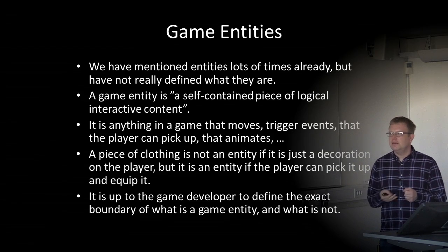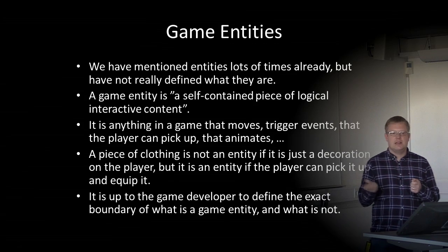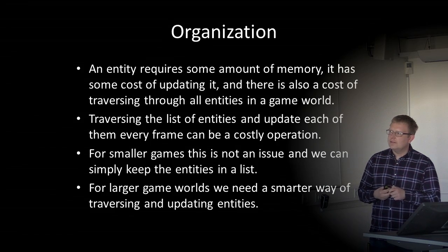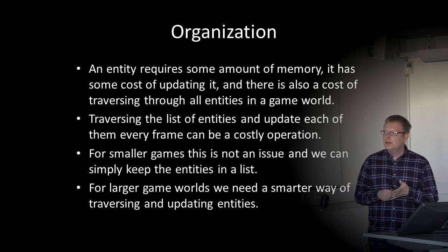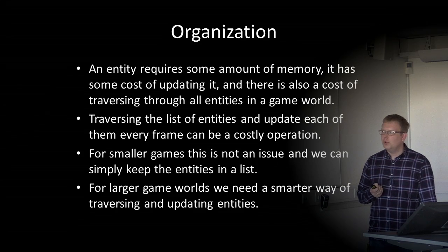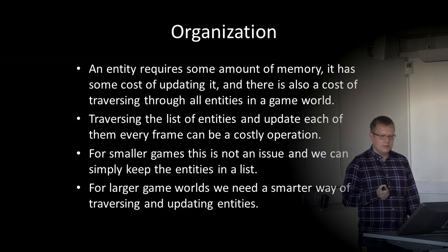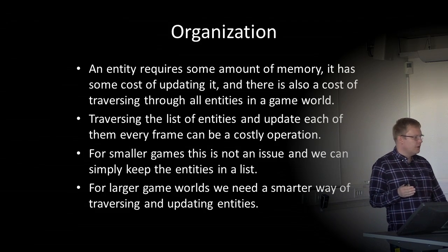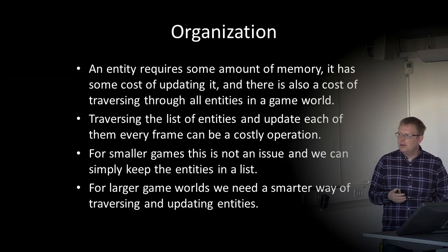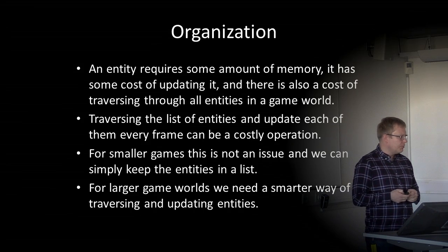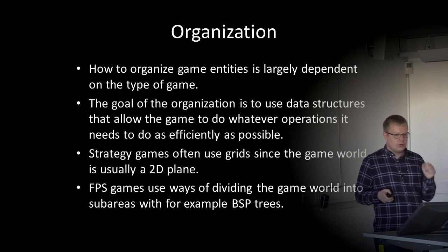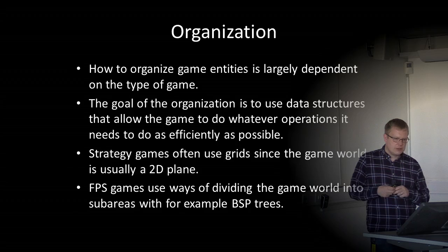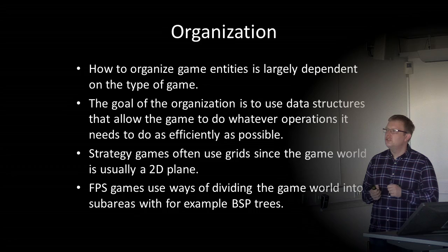A rule of thumb: if it moves, can trigger events, can be interacted with by the player, or can animate — then it is a game entity. An entity requires memory, has a cost for updating it, running animations, and running AI code. There is also a cost of traversing all entities in the game world. For smaller games, we can simply keep entities in one list and update all of them every frame. For larger game worlds, we need a smarter way of traversing and updating entities, and how to organize them depends largely on the type of game. The goal is to use data structures that allow the game to perform its operations as efficiently as possible.